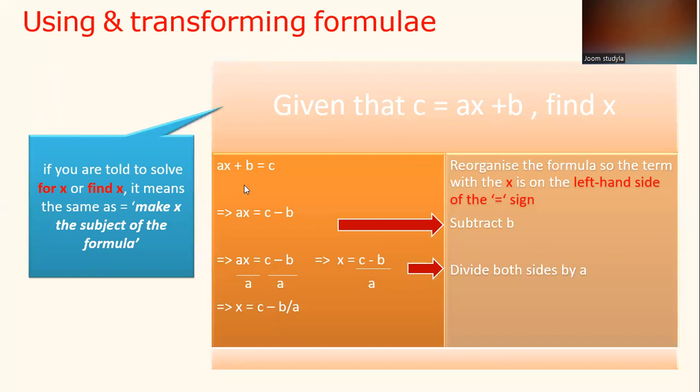AX plus B equals C. We rearrange it so that X becomes the subject of the formula. We reorganize the formula so the term with the X is on the left-hand side of the equal sign. Initially, it says that C equals AX plus B, but because it asks to find X, you have to make X the subject of the formula. So AX plus B equals C.